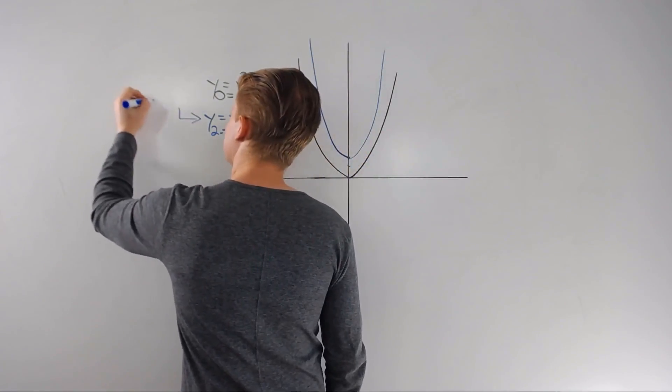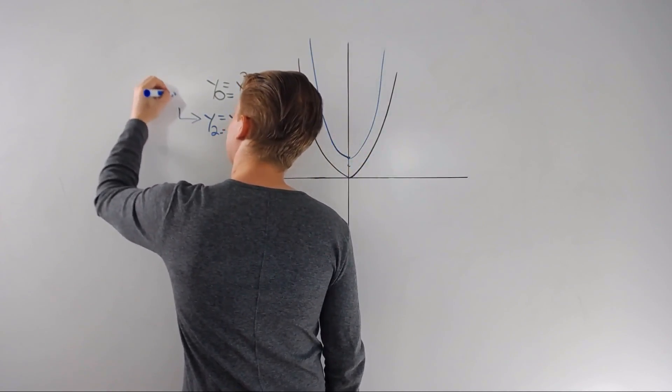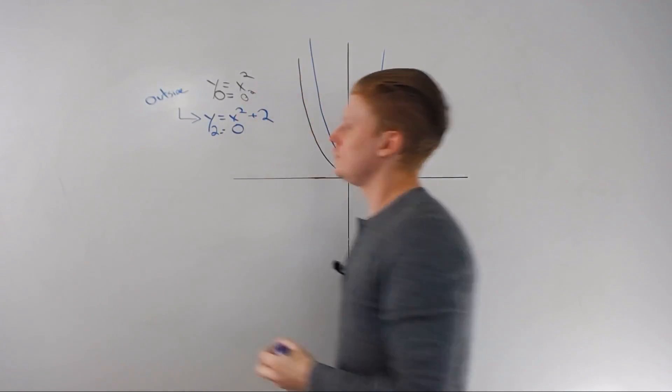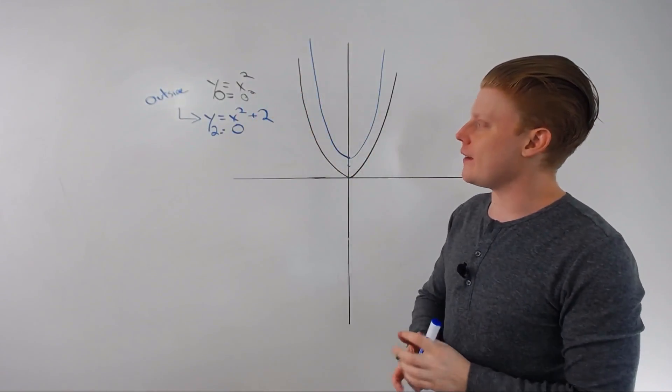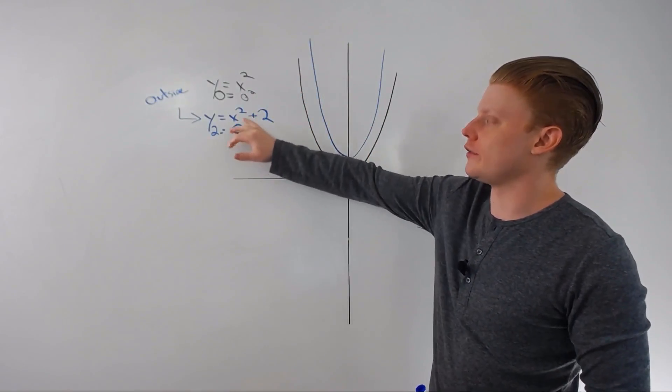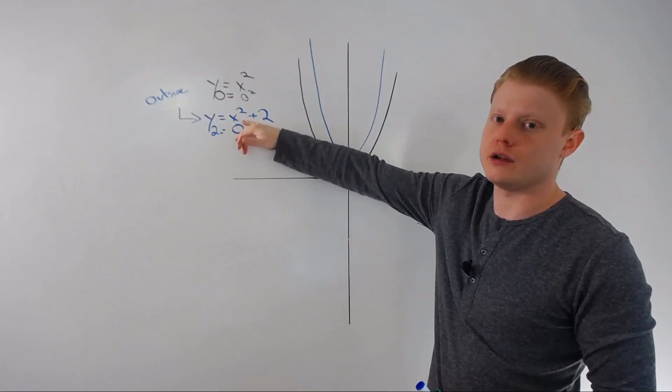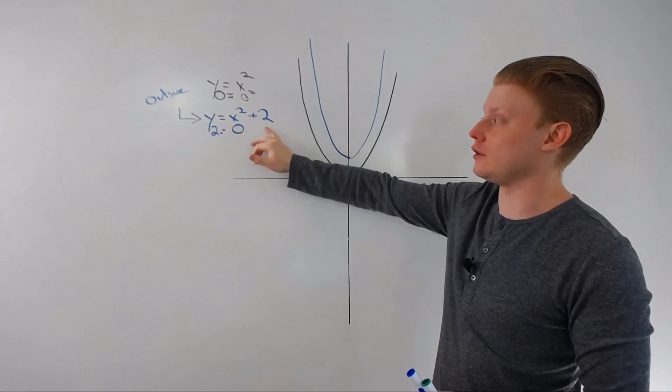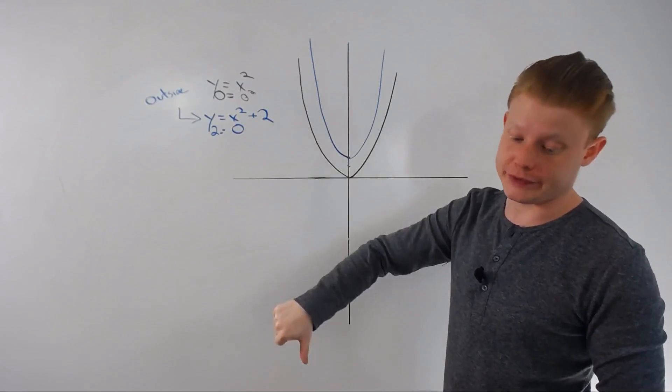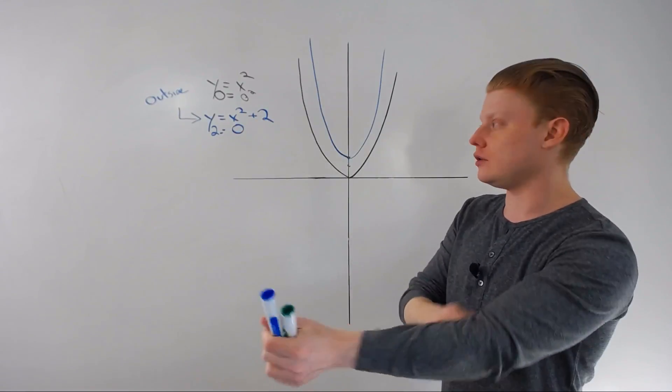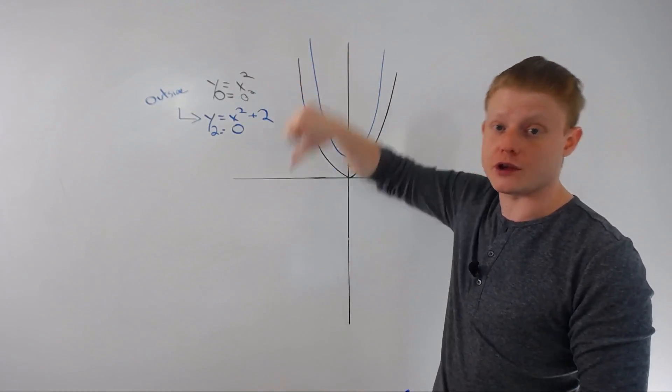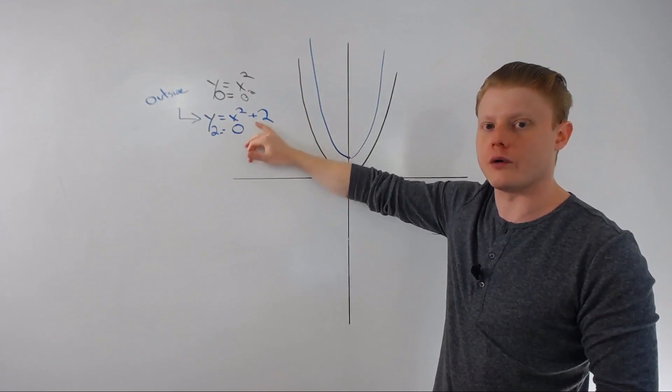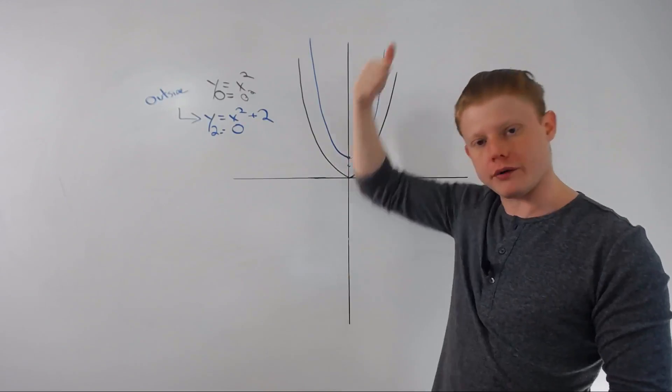So what's going on here? Well, you'll notice that the two is outside of the function, the parent function. If it's outside, meaning that what's happening to the two is not the same thing that's happening to the x, it's going to go up or down. If it's positive it's going to go up, if it's negative it goes down, so it kind of comports with the signs.